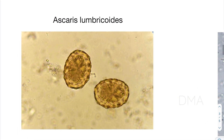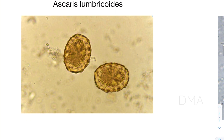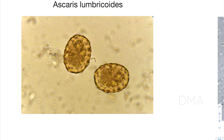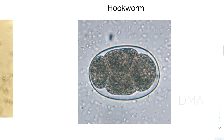First, let's take a look at the Ascaris lumbricoides egg. As you can see, it is a bile-stained egg — it is yellow in color. It has a thick outer wall and it has an unsegmented ovum.